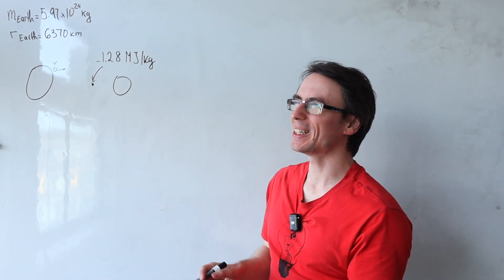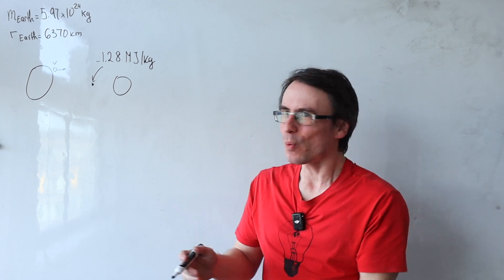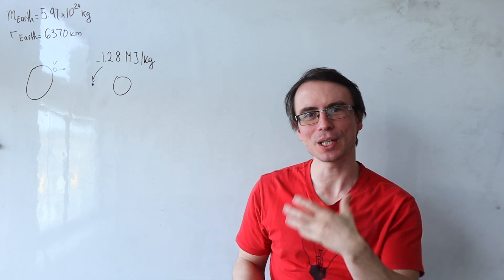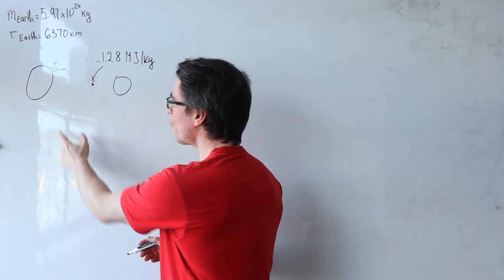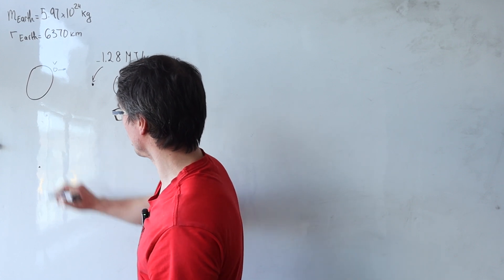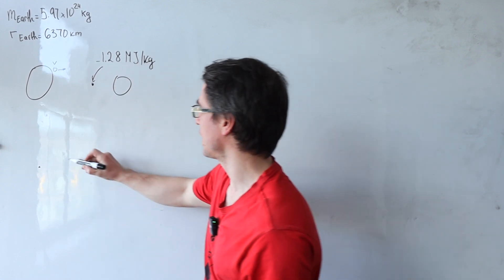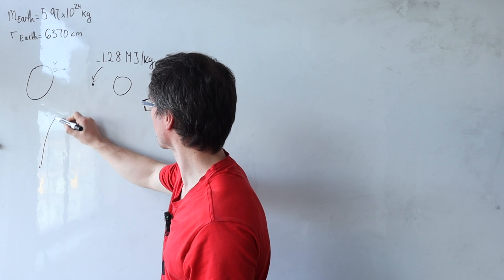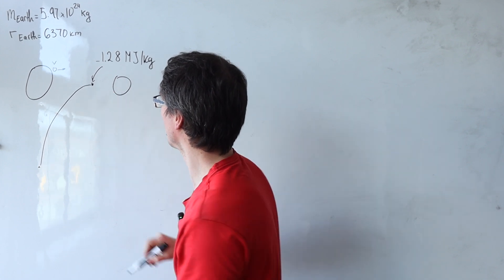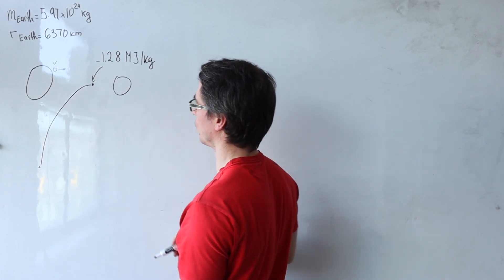Before we solve this question, let's think about an analogy. What is actually happening to the gravitational potential? Over here on Earth, the gravitational potential is going to be pretty negative and then it's going to rise to a value which is closer to zero.